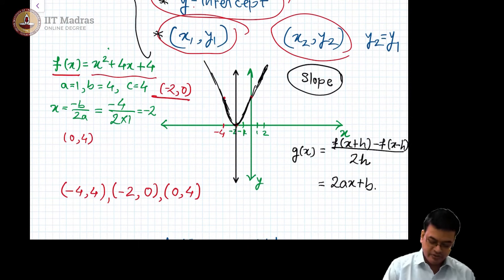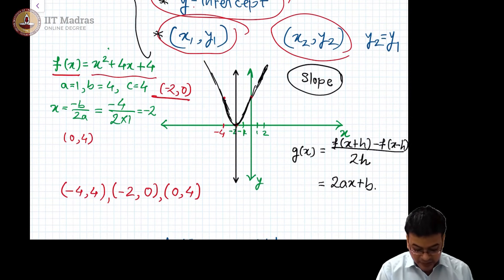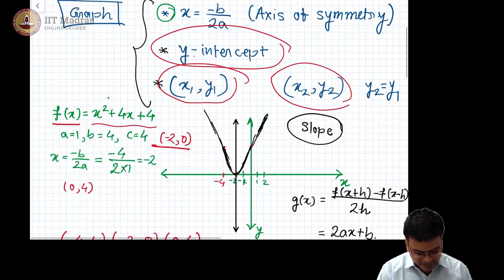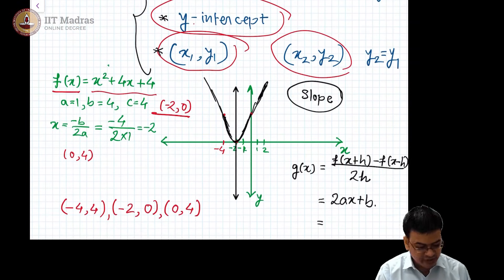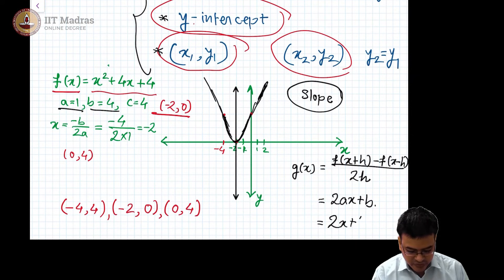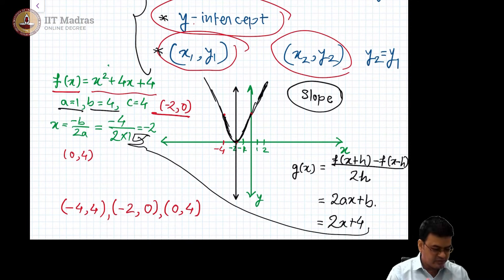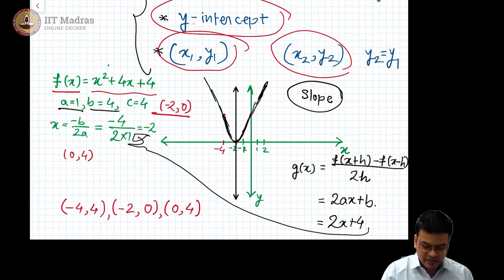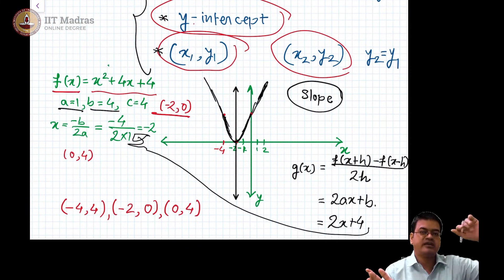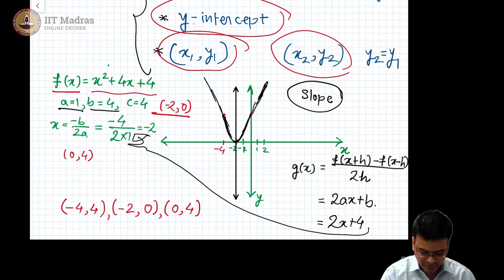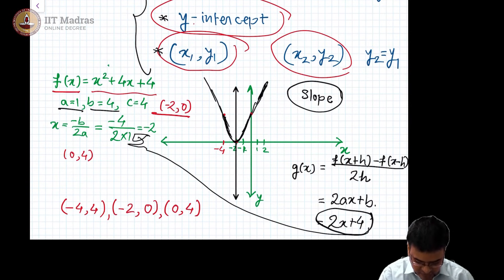If you have a doubt, you can go to the video which deals with this derivation. In this case, with a = 1 and b = 4, the slope function is g(x) = 2x + 4. If you set g(x) = 0, you get x = −2, which is the point where the function attains its minimum or maximum. When the slope is equal to 0, the function is switching from an increasing trend to a decreasing trend, or vice versa — it changes its behavior.